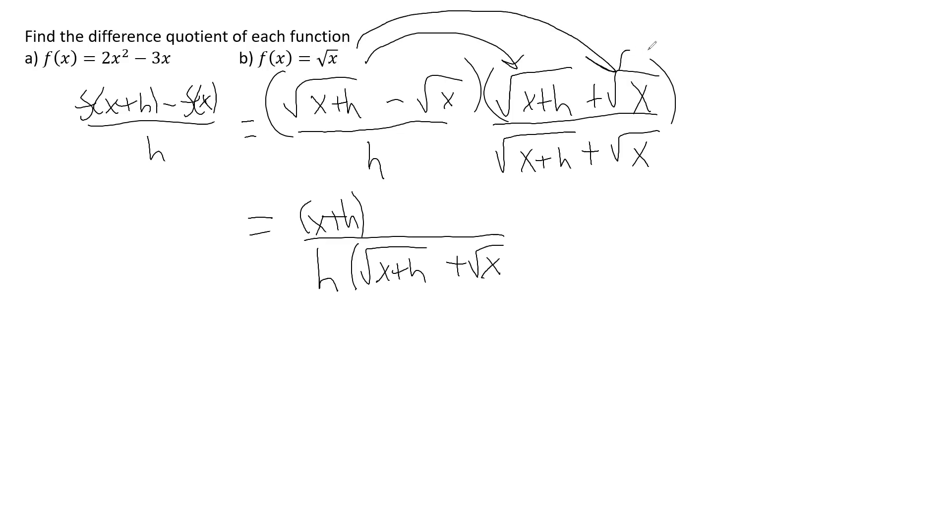Now, the outers and the inners are going to be the same thing, except they're opposites. So they're going to end up canceling. And this is part of the reason why we do conjugates. And then the last is going to be square root of x squared.